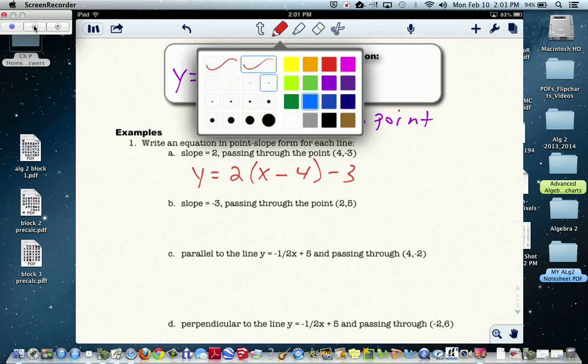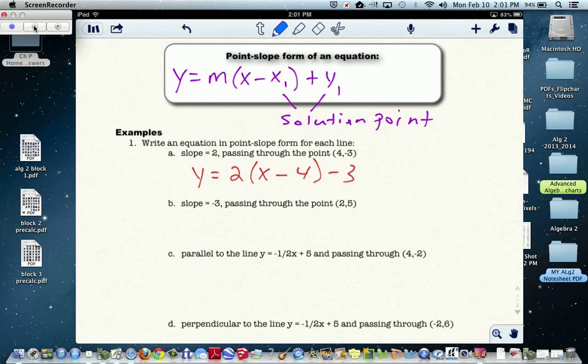I tend to like it when they simplify these. So to simplify, I would distribute the 2 to both. That's y equals 2x minus 8 minus 3. So another slope-intercept form would be y equals 2x minus 11.